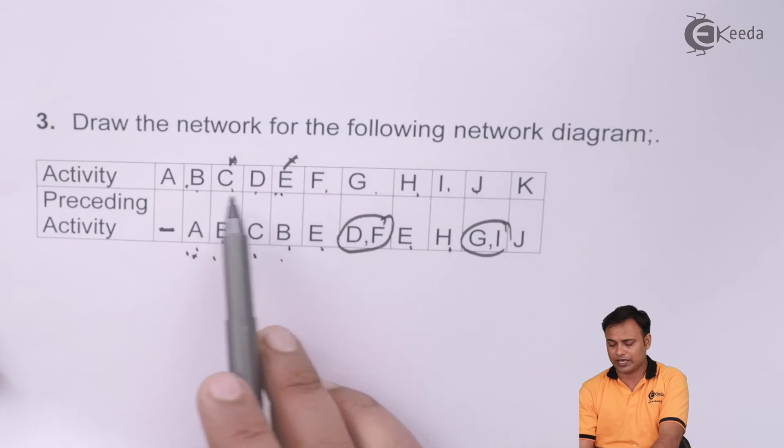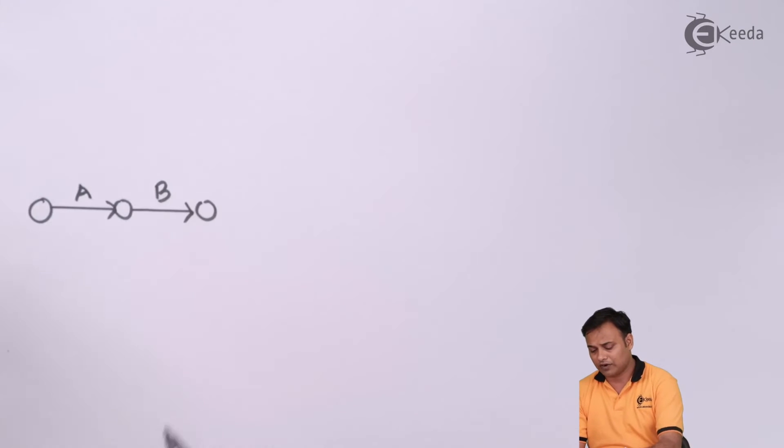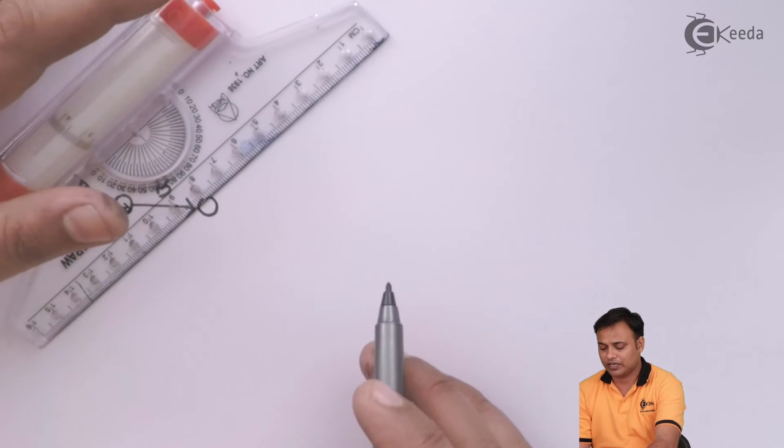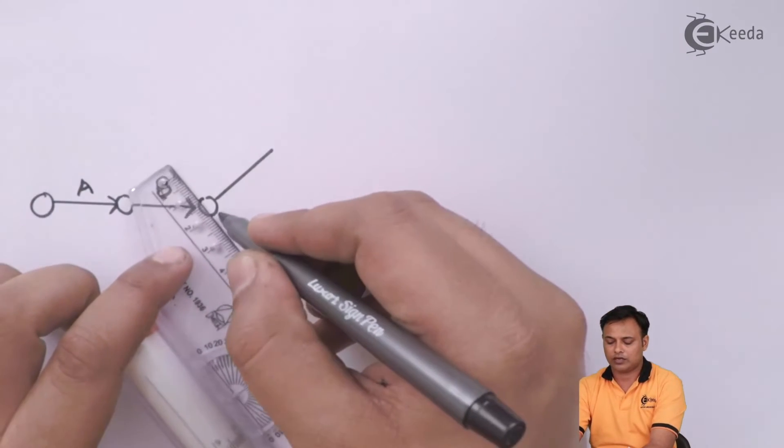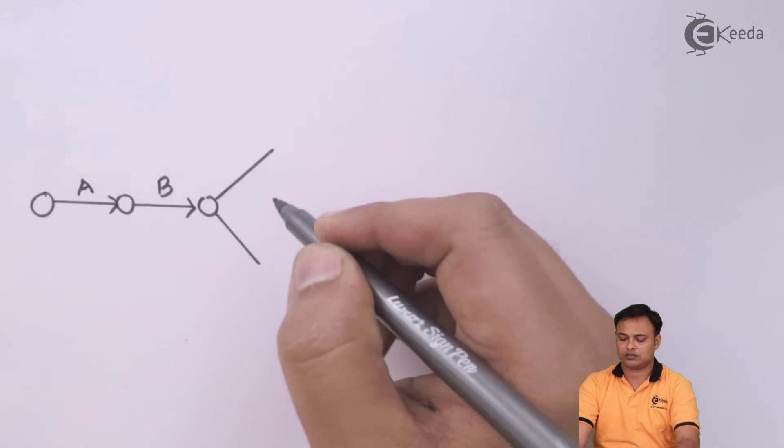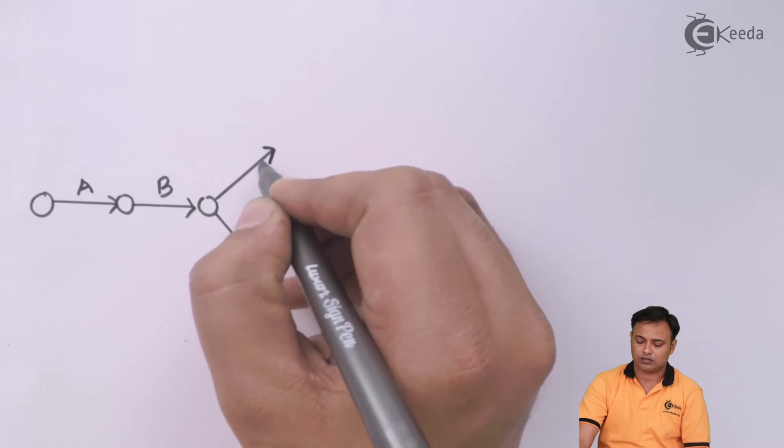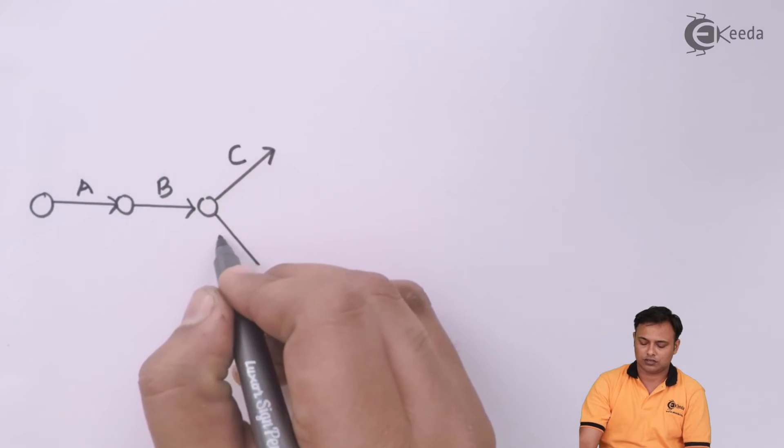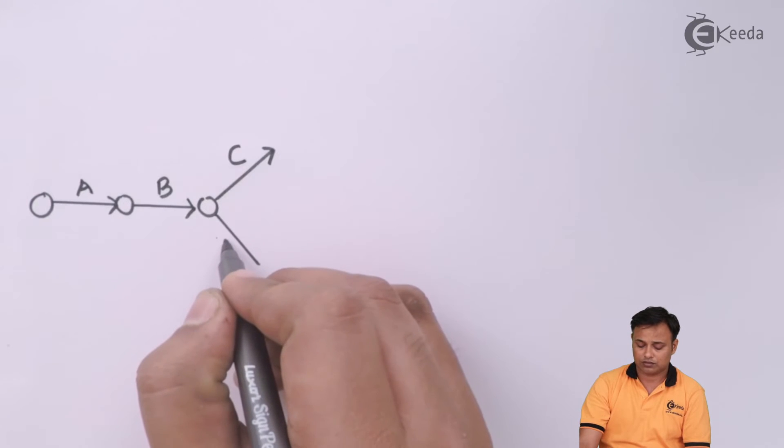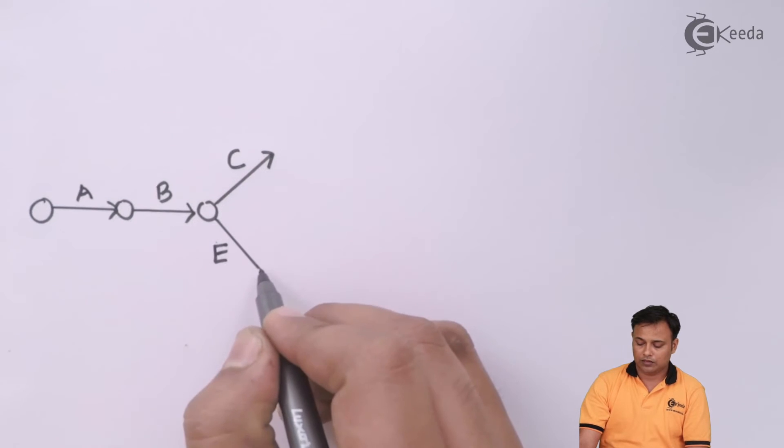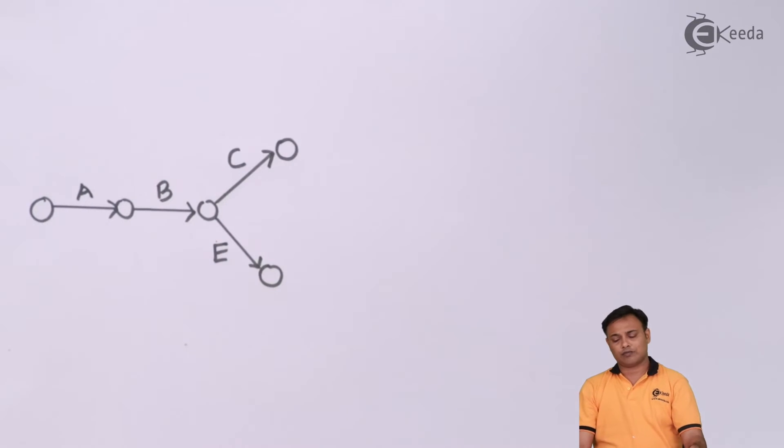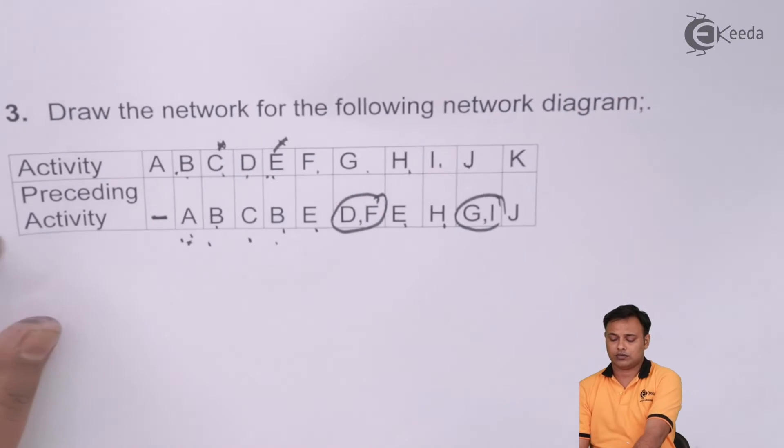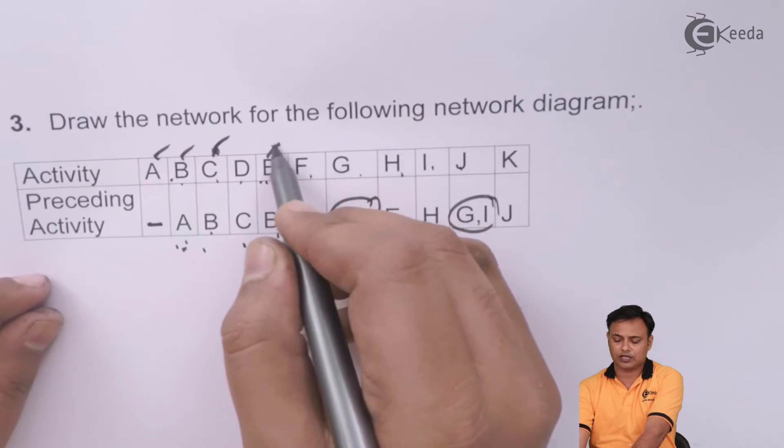Then after B we have got two activities. Be careful now, after B we have C, after B we have E. So I'll draw C simultaneously after completion of B. Here it is my C and here it is my E. C and E start after completion of B. We are done with A, we are done with B, we are done with C and E.